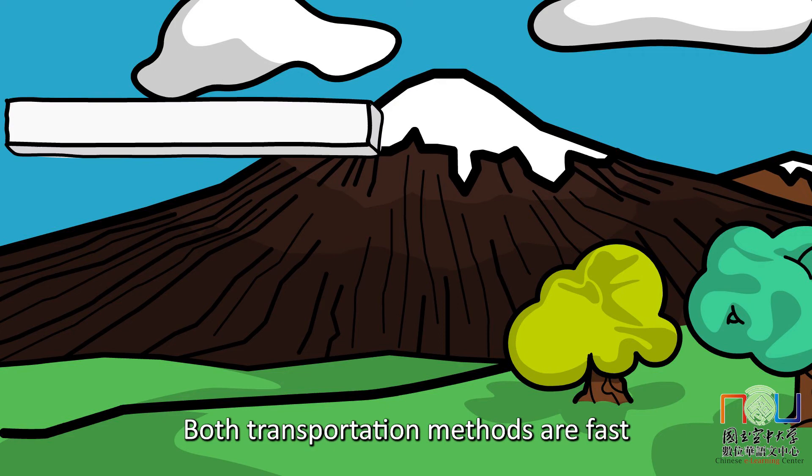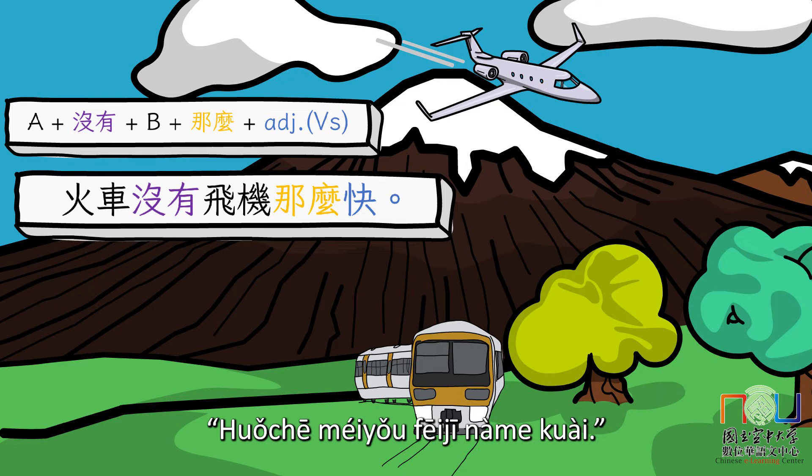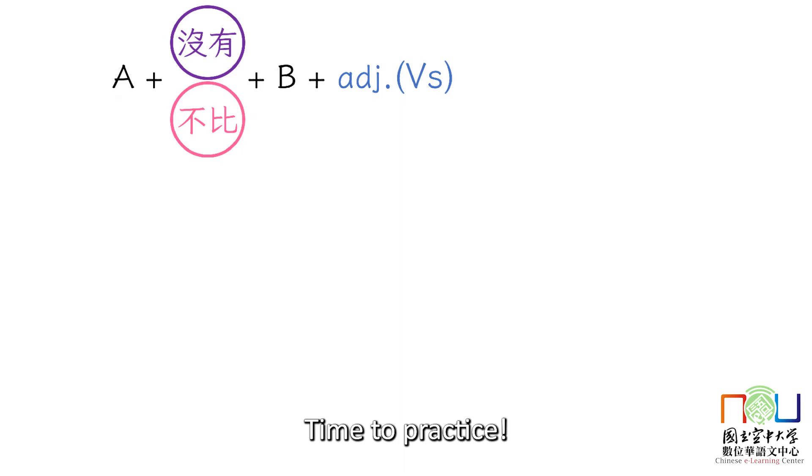Both transportation methods are fast, but see which one is faster. Try to make a sentence with 没有: 火车没有飞机那么快. Trains are not as fast as airplanes. It expresses the meaning that trains are fast, but not as fast as airplanes.